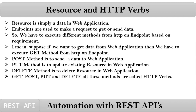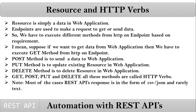All these methods — GET, POST, PUT, and DELETE — are called HTTP verbs or HTTP operations. These are the four basic methods for HTTP or HTTPS. We have some more methods that we'll discuss going forward. Finally, remember: all REST API responses are in the form of CSV or JSON, and rarely in text format — but most commonly in JSON.